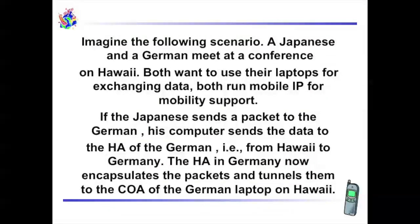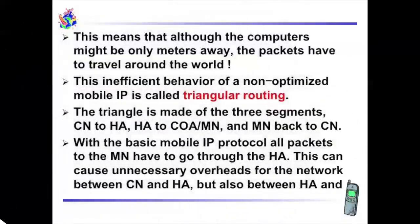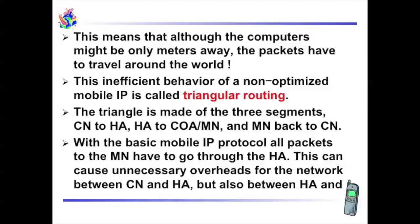In this PowerPoint presentation, the example has been changed to Germany and Hawaii. Imagine the following scenario: a Japanese and a German met at a conference on Hawaii. Both want to use their laptops for exchanging data; both run mobile IP for mobility support. If the Japanese sends a packet to the German, his computer sends the data to the home agent of the German — that is, from Hawaii to Germany. The home agent in Germany encapsulates the packets and tunnels them to the care-of address of the German laptop on Hawaii. This means that although the computers might be only meters away, the packets have to travel around the world.